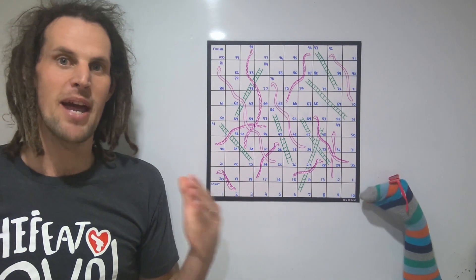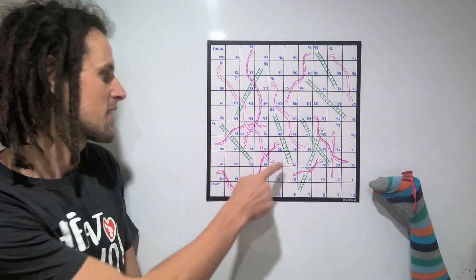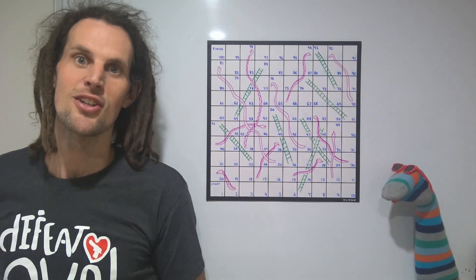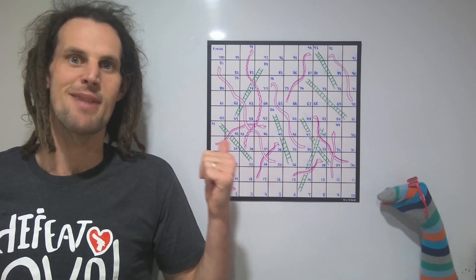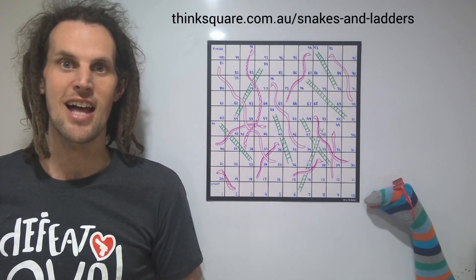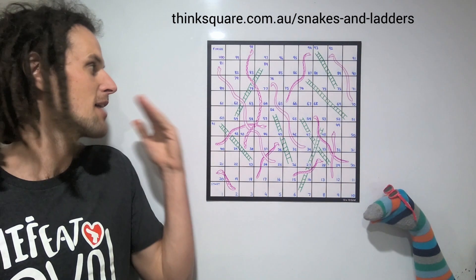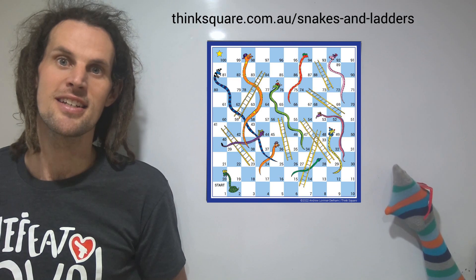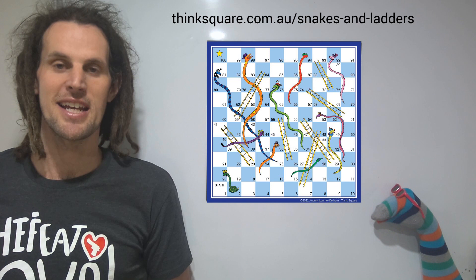To counter some of the powerful strategies you'll discover when playing, I've created this specially made game board with carefully placed snakes and ladders to ensure your game doesn't end in a heartbeat. You can download this amazing piece of artwork free at thinksquare.com.au/snakesandladders. You can also purchase a beautifully illustrated version, which comes with extension questions and activities via the same link.